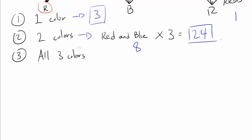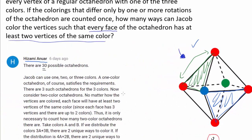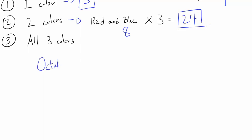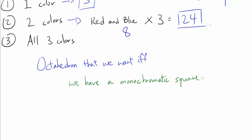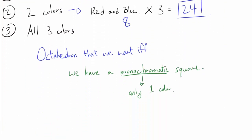Now for the most interesting part: using all three colors. For this case, the condition is not automatically satisfied. I contend that we get the octahedron we want if and only if there exists a monochromatic square — a set of four equatorial vertices all of the same color. In the example we saw earlier, we had exactly such a square made of one color.